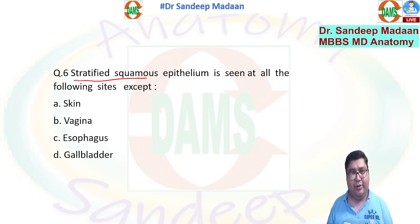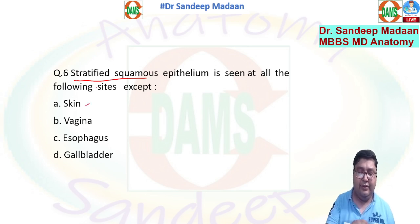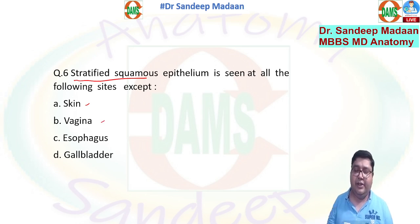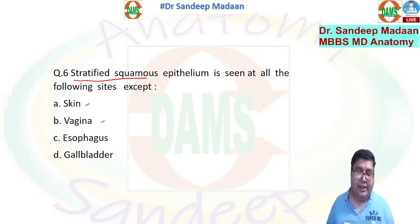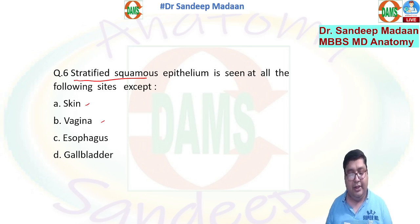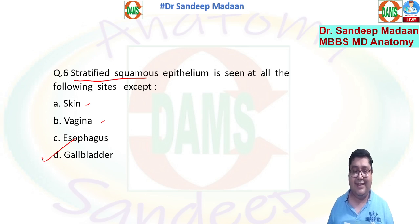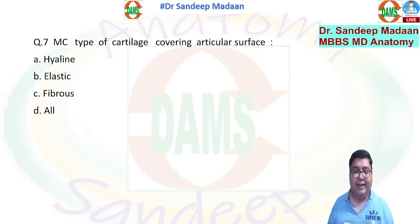Regarding stratified squamous epithelium: stratification is seen at sites where wear and tear chances are very high. All the openings of the body have stratification. The skin, vagina, and esophagus — in continuity with the oral cavity — all have stratification. The difference is that skin has keratinization, whereas the vagina and esophagus do not. The gallbladder is part of the GIT and has simple columnar epithelium with no stratification, so D is the correct answer.